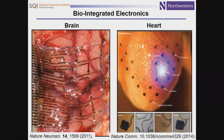That basic idea of inorganic nanomaterials as building blocks for biointegrated electronics has a lot of merit. We and others have been working in that direction at an accelerated pace over the last few years to develop advanced high-performance kinds of electronic devices that can support this vision for biointegration. We've done a lot in the brain and the heart, as I mentioned before, and in the skin as well. This is a good transition point to think about this frontier area of transient electronics.